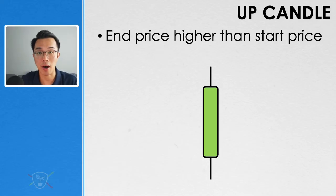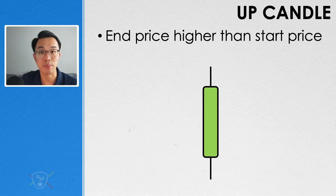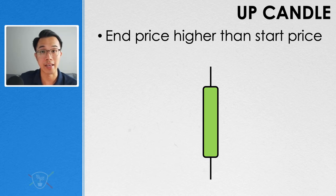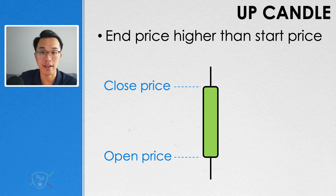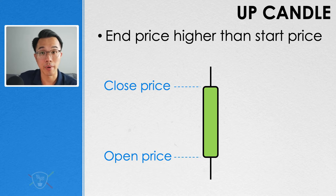Let's zoom into an individual candle and see what it tells us. An up candle is a market session whereby the price finished higher than where it started. If this is a candle on a daily chart, this is the price at the start of the day, also known as the opening price. And this is the price at the end of the day, also known as the closing price. For an up candle, the closing price is above the opening price.